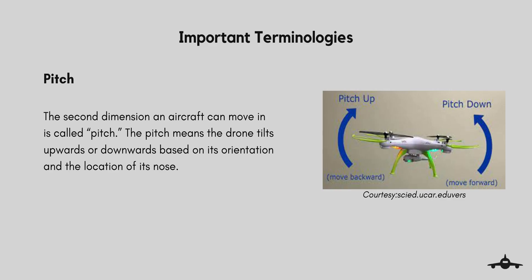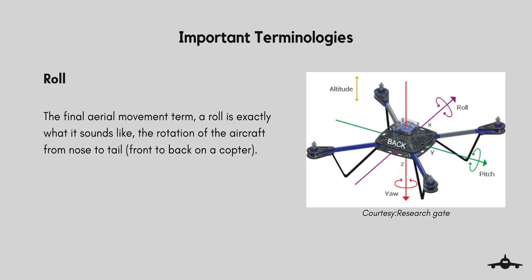Pitch is the second dimension an aircraft can move in. Pitch means the drone tilts upwards or downwards based on its orientation and the location of its nose. A downward tilt will move the drone in a forward motion, while an upward tilt will move it in a backward motion.